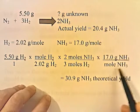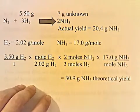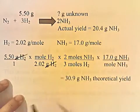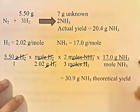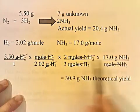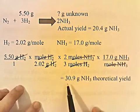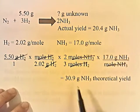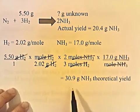To convert moles of NH3 into grams of NH3, I put moles of NH3 on the bottom so they cancel, and one mole of NH3 equals 17 grams. Grams of H2 cancel, moles of H2 cancel, moles of NH3 cancel, and you're left with grams of NH3. 5.50 times 2 times 17, divided by the product of 2.02 and 3, gives 30.9 grams of NH3. This is the theoretical yield — the amount of NH3 you're supposed to get if you completely react 5.50 grams of hydrogen gas.